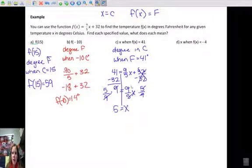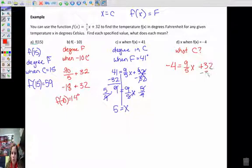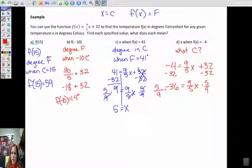And then finally we have when f of x is negative 4. So that would be when our Fahrenheit, when Fahrenheit is negative 4, what is Celsius? And that's what we're going to find out. So again, negative 4 is going to equal 9 fifths x plus 32 minus 32 from both sides. And we're going to have negative 36 equals 9 fifths x multiplied by 5 ninths. Negative 36 times 5, that's, I did the math already, it's 180, negative 180, and then divide by 9, and that's going to be negative 20.